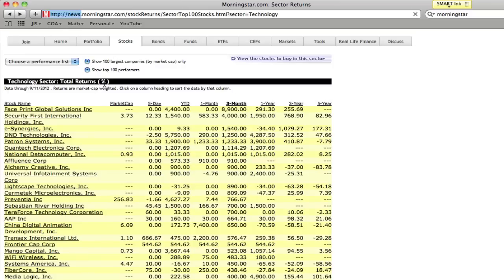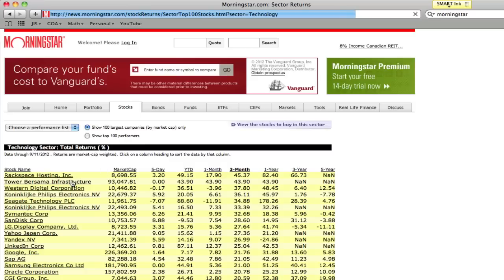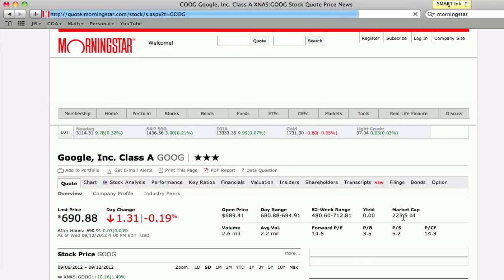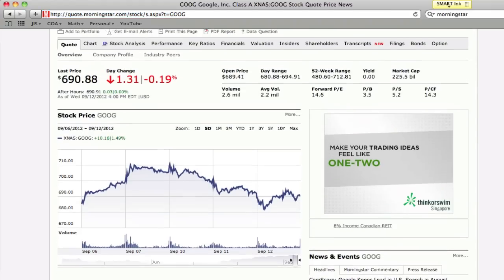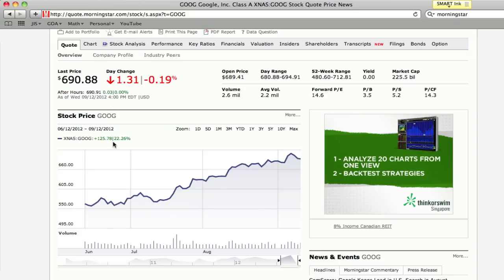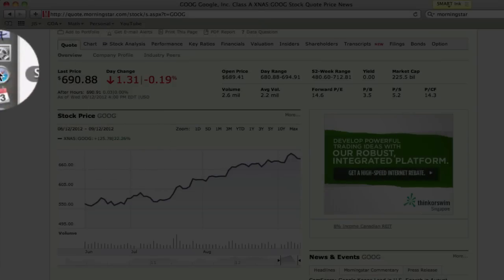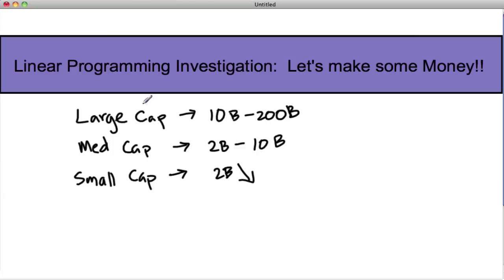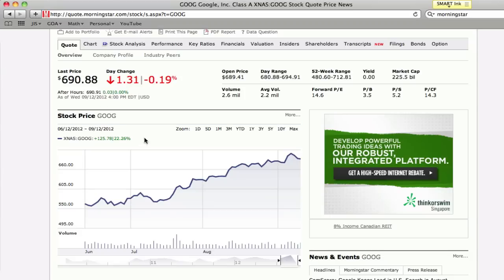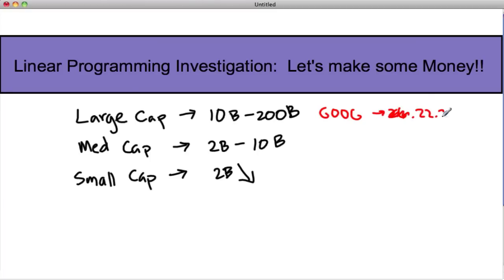So let's go find a large cap company. So let's show 100 largest companies by market cap. All right, so here's a big company. Here's Google. I think we've heard of that one before. So Google has $225 billion. Definitely a large cap. You can see that over the last three months, it's gone up 22.26%. So I would go over to my notebook file, and I'll say, okay, my large cap is going to be Google. So Google's ticker number is GOOG, and that's gone up 22.26%.